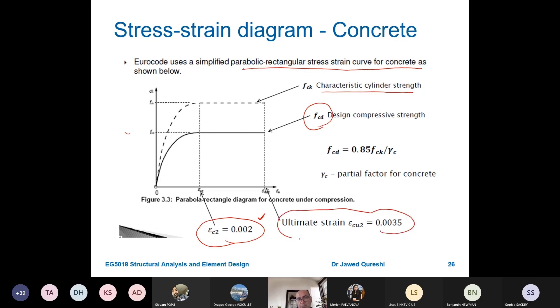How do we measure it? Simply we apply load to cube or cylinder, we attach this strain gauge especially for cylinders in the middle, and then we measure the strain. Strain is change in length per unit length. The key thing to remember here is this fcd which is 0.85 times fck over gamma c, where gamma c is the partial factor.